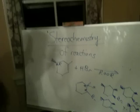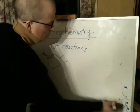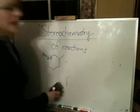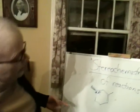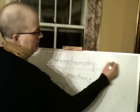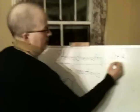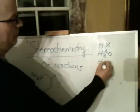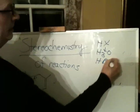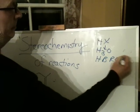So that's what you do with radicals and cations. That would take care of like HX, H3O+, and HBr with peroxides. That's three of them.